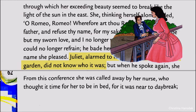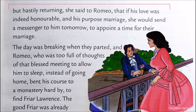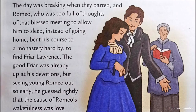Then Juliet was called away by her nurse, for it was time to go to bed. For a while, Juliet told Romeo that if his love was indeed honourable and his purpose marriage, then when they were parted, various thoughts knocked on Romeo's mind, and instead of going home, he went to find Friar Lawrence.